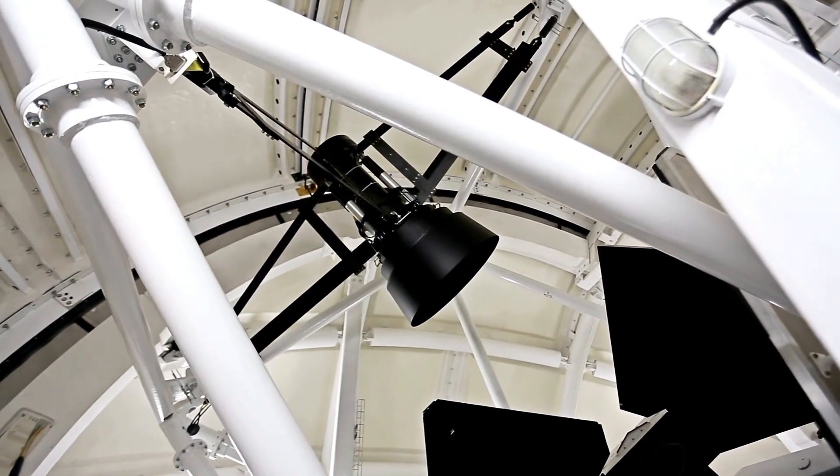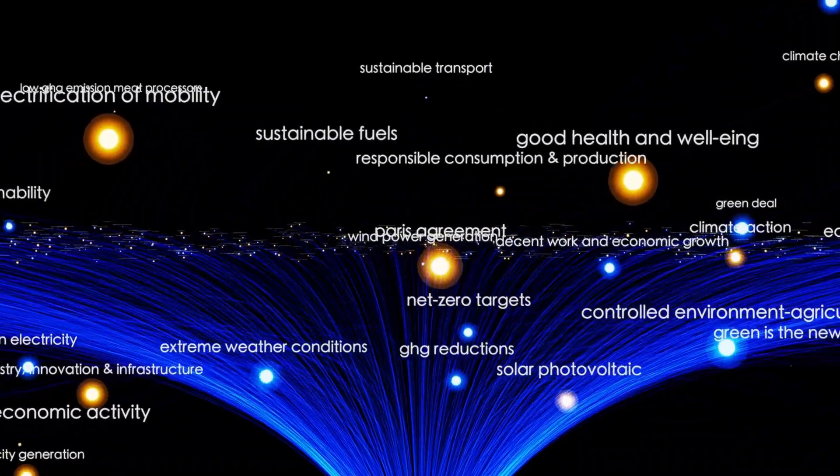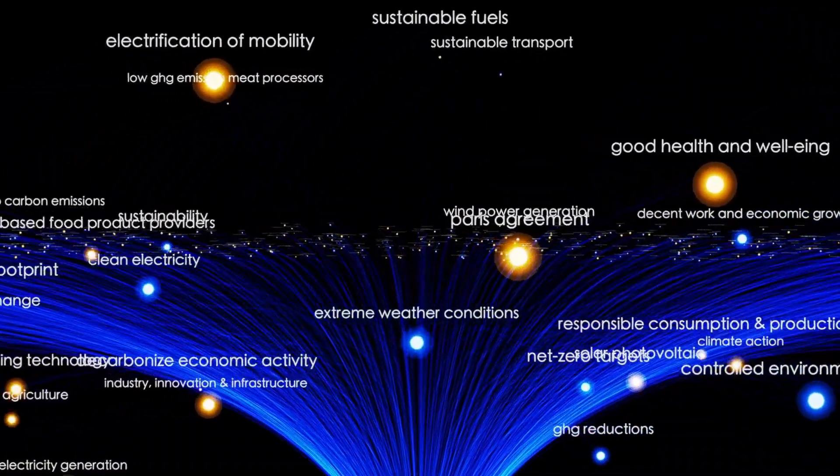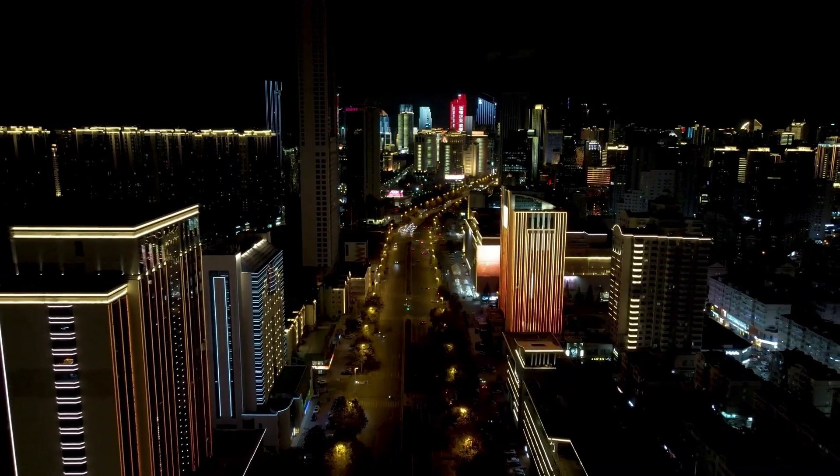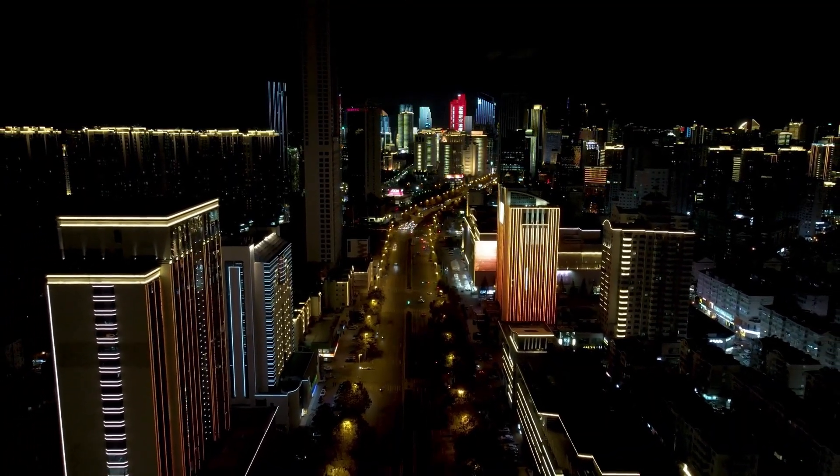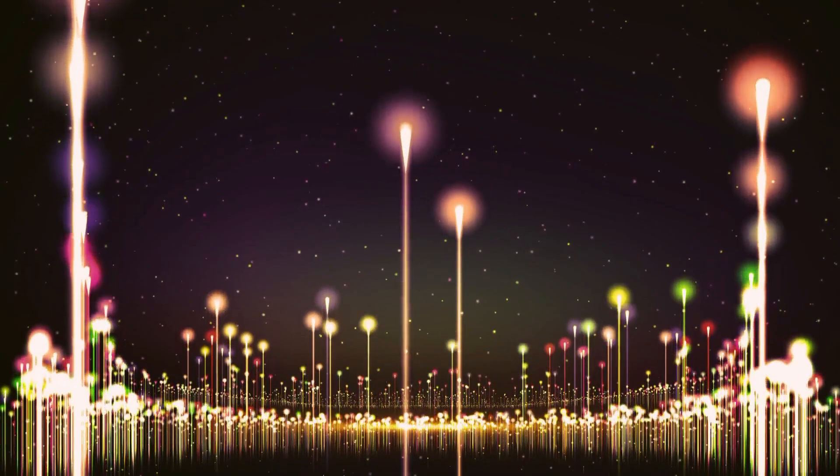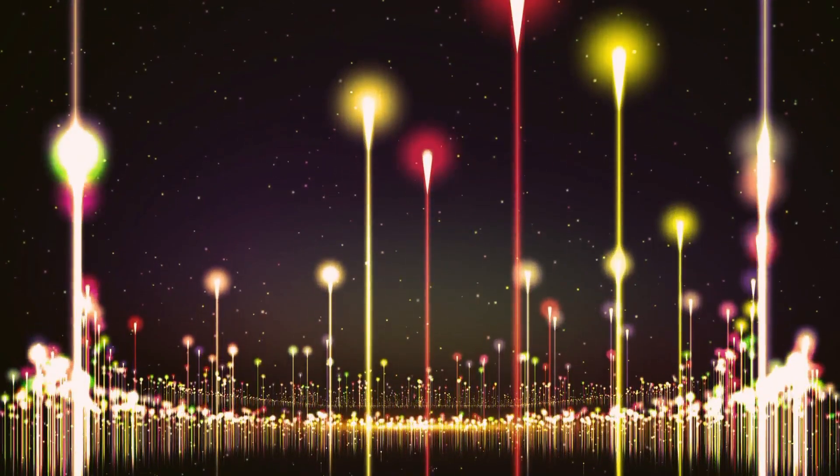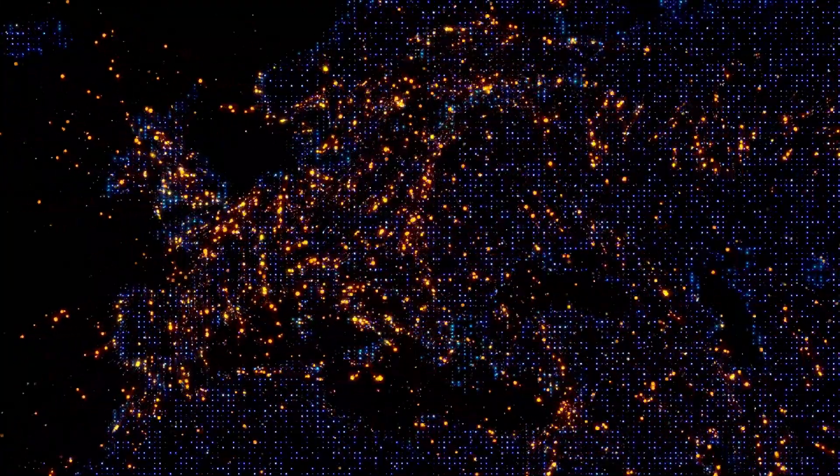A major point of debate among scientists is whether these massive supercluster complexes, like the BOSS Great Wall, are gravitationally bound and moving as single units, or if they are slowly drifting apart as the universe continues to expand. On the largest scales, the universe is believed to be structured as a web of filaments and voids. These filaments, which make up the cosmic web, are the densest regions, filled with galaxy clusters, while the voids represent the vast emptiness between them.